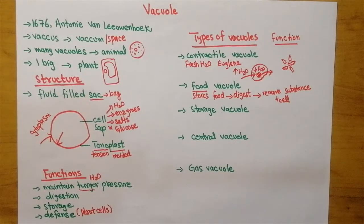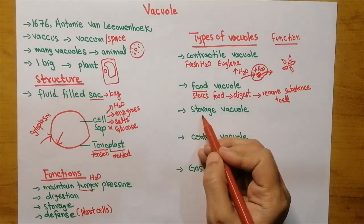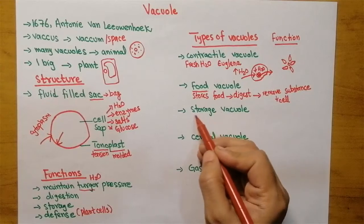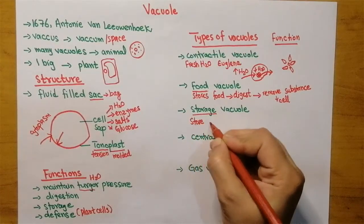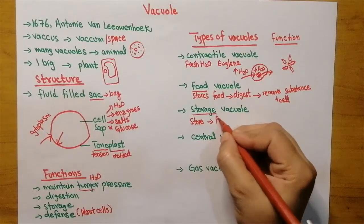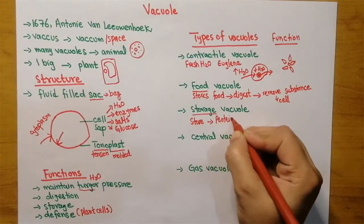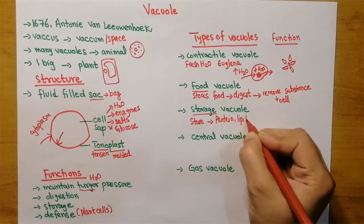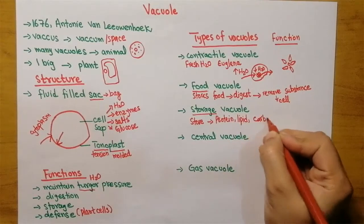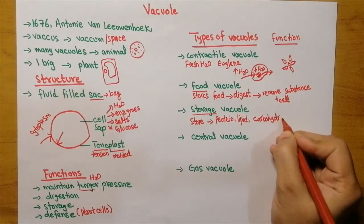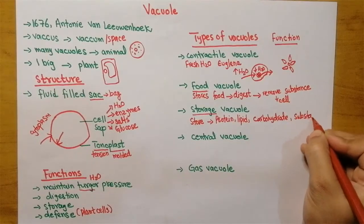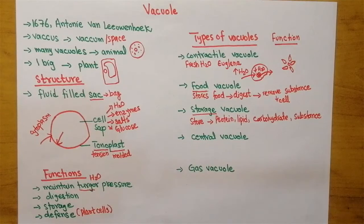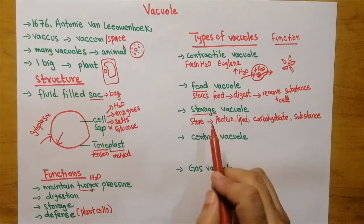The other type of vacuole is storage vacuole. As the name indicates, it is going to store substances which are proteins, lipids, carbohydrates, or any other substances. It's going to store that, and when the cell needs these substances, this storage vacuole is going to provide the cell with them.